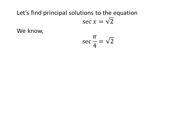We know the value of secant of π/4 is square root of 2. We also know that the value of secant of x repeats after the interval of 2π, so secant of 2π minus a is equal to secant of minus a. We also know the trigonometric identity secant of minus a is equal to secant of a.